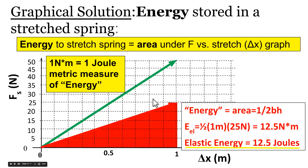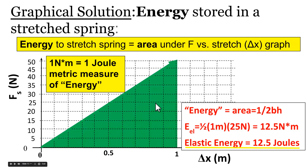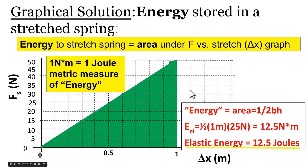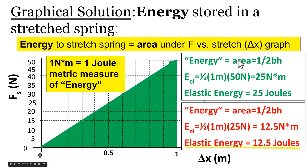Let's now do the same thing for the green spring. That green spring was stronger or stiffer — it required more force per meter to stretch it. So if we stretch the green spring one meter, it's going to store more energy. We can see that by the larger triangle shaded under the green line on the force versus stretch graph. The energy is one-half times one meter times 50 newtons, giving 25 newton meters, or 25 joules.